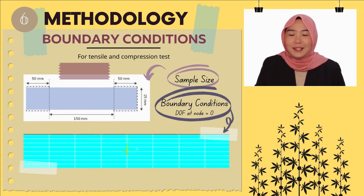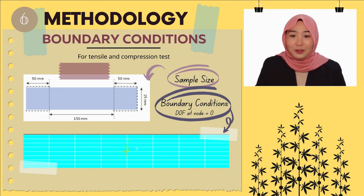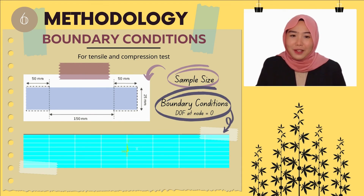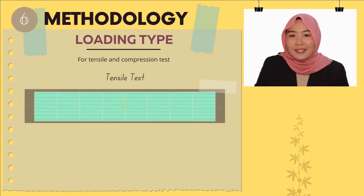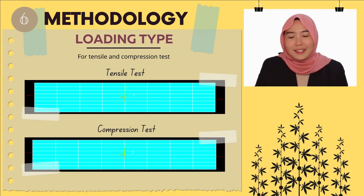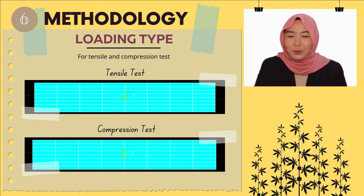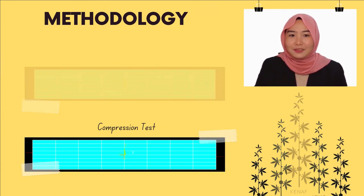The slide shows the example of the sample size used and the boundary condition of the specimen, in which 0 degrees of freedom is defined at the middle node of the specimen. The slide also shows the example of loading type and the mesh for both tensile and compression tests.